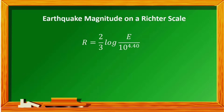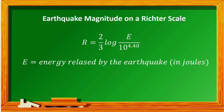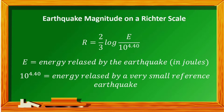The magnitude r of an earthquake is given by r equals two-thirds times log of (e divided by 10 raised to the power of 4.40), where e is the energy released by the earthquake in joules, and 10 raised to the power of 4.40 is the energy released by a very small reference earthquake.